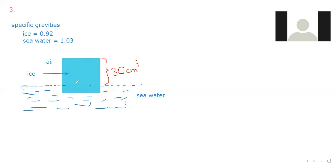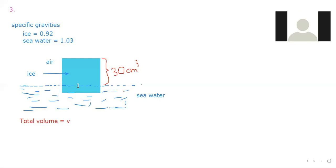Let's assume the total volume is V. If total volume is V, the exposed part is 30 and the submerged part is V minus 30.